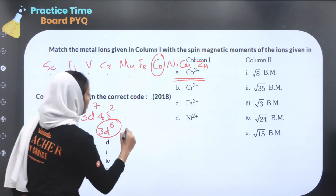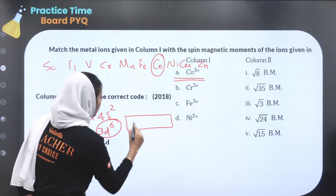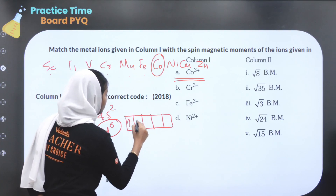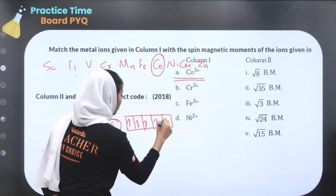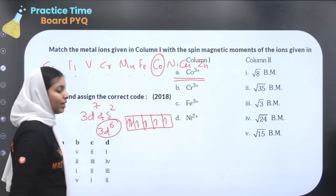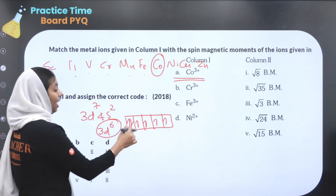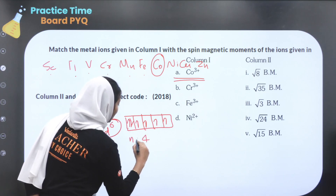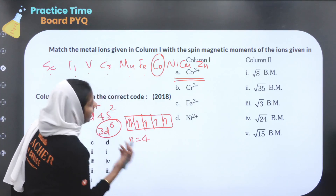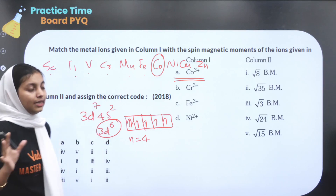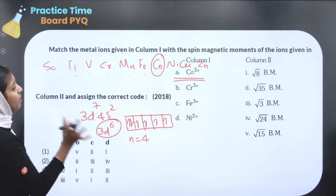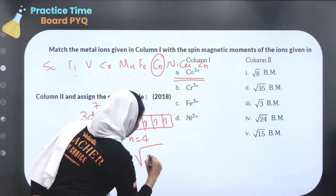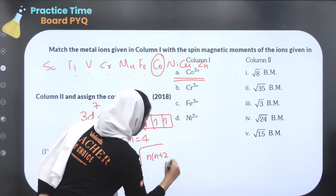For 3d⁶, filling the orbitals we get 4 unpaired electrons. Using the spin-only formula: root of n(n+2).